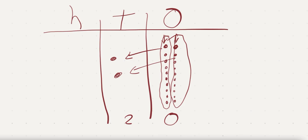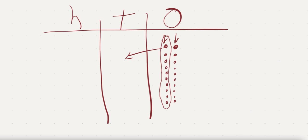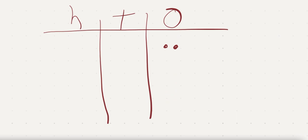And it works not just for this, but you can also use it to extend more complicated examples. What if I had 23 times 10? What happens? So now I have two tens, and each one of those — multiply it by 10.